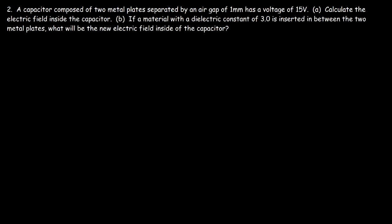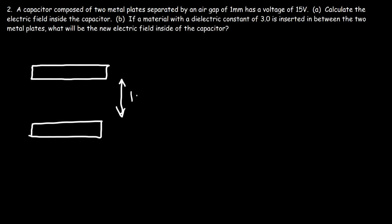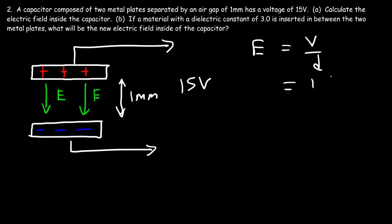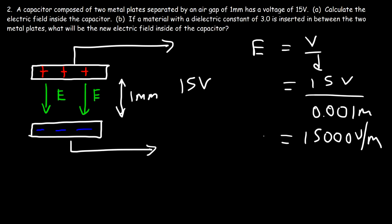Problem two: a capacitor composed of two metal plates separated by an air gap of one millimeter has a voltage of 15 volts. Calculate the electric field inside the capacitor. The capacitor is separated by a distance of one millimeter, with a positive plate and a negatively charged plate. The electric field is simply the voltage divided by the distance: 15 volts divided by 0.001 meters, which works out to be 15,000 volts per meter.